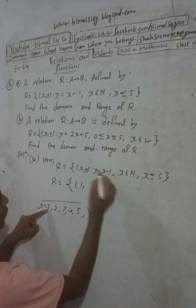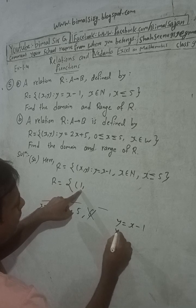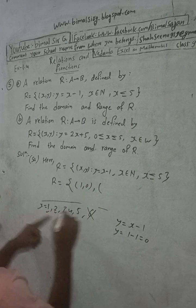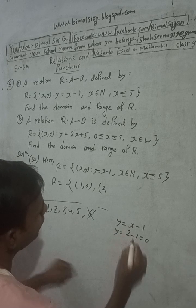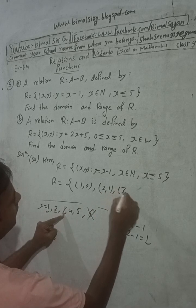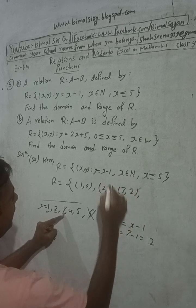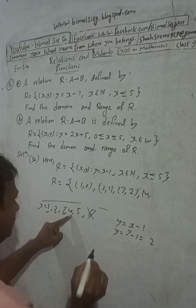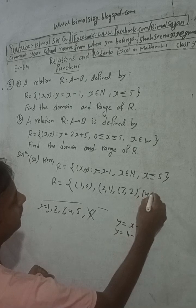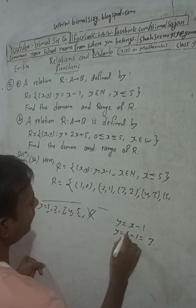So x minus 1: when x = 1, y = 0; when x = 2, y = 1; when x = 3, y = 2; when x = 4, y = 3; when x = 5, y = 4.